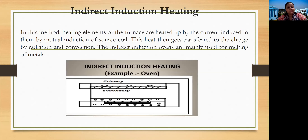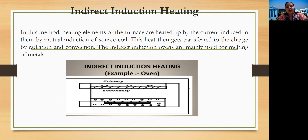In indirect induction heating, the heating elements of the furnace are heated up by current induced in them by mutual induction from a source coil. Whenever there is induction heating, there is always the presence of mutual induction, whether direct or indirect. This heat then gets transferred to the charge by radiation and convection. Indirect induction ovens are mainly used for melting of metals in industrial purposes.